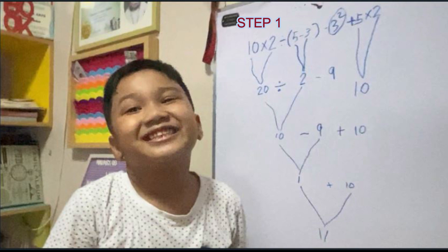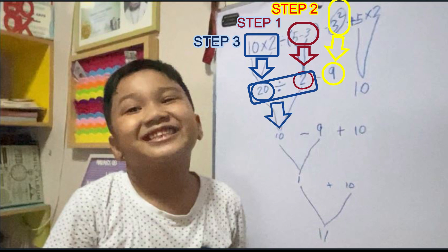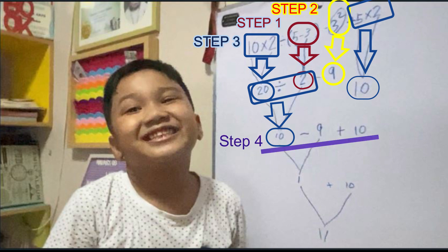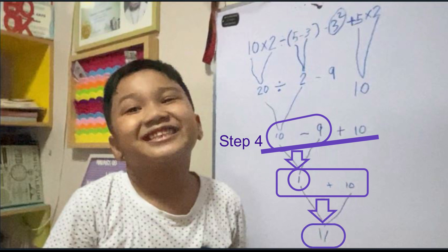Step 1, parenthesis first: 5 minus 3 equals 2. Step 2, solve the exponent: 3 times 3 equals 9. Step 3, multiplication or division from left to right: 10 times 2 equals 20, 20 divided by 2 equals 10, 5 times 2 equals 10. The last step is addition or subtraction, whichever comes first from left to right: 10 minus 9 equals 1, and 1 plus 10 equals 11. We have an answer!